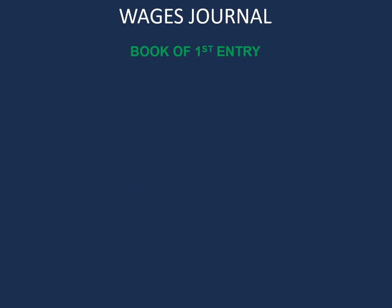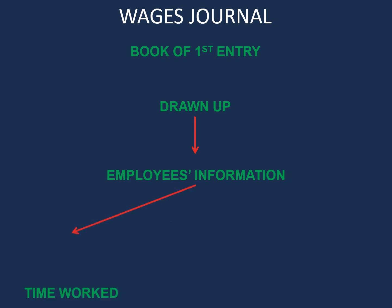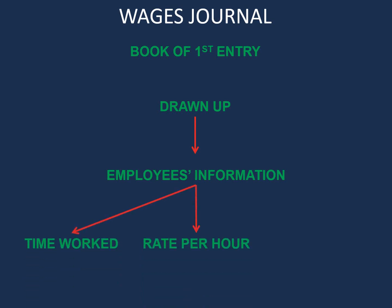The wages journal is also a book of first entry used to calculate the employee's wages or salary. It's drawn up using the employee's information, such as the employee's time worked, the employee's rate per hour, and the deductions. Other information can also form part of this, as we will see in later videos. We'll see you next time.